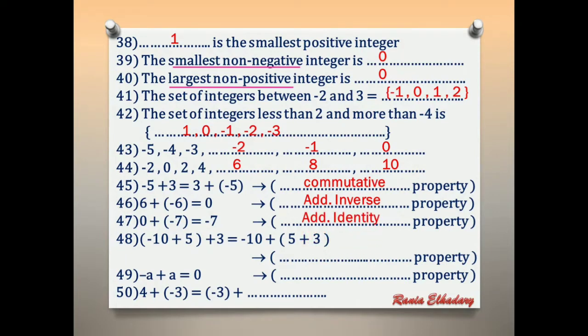Number 48: (negative 10 + 5) + 3 = negative 10 + (5 + 3). We have two numbers grouped in brackets on each side. This is the associative property.